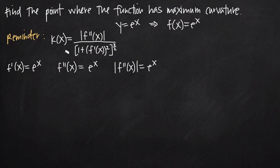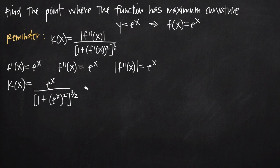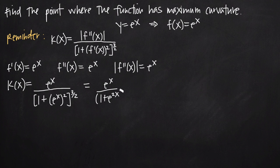Now we have these components, we can plug them into our curvature kappa function. So k of x equals e to the x in the numerator. In the denominator, we have the quantity 1 plus f prime of x squared, which is e to the x squared, giving us e to the 2x, raised to the 3 halves power. So we get e to the x over quantity 1 plus e to the 2x raised to the 3 halves. We can't simplify further, so this is our curvature function.